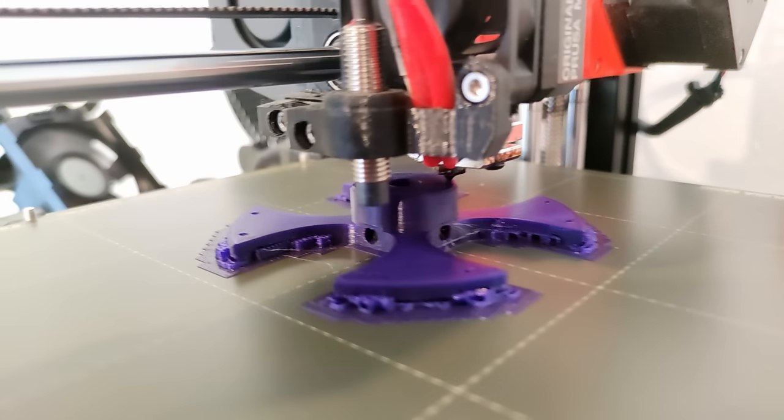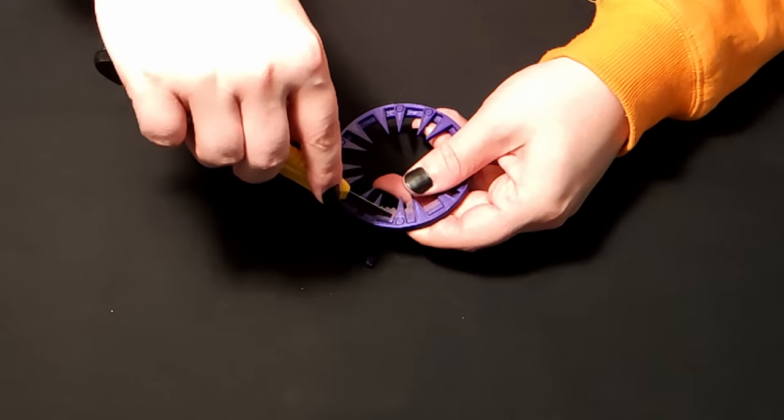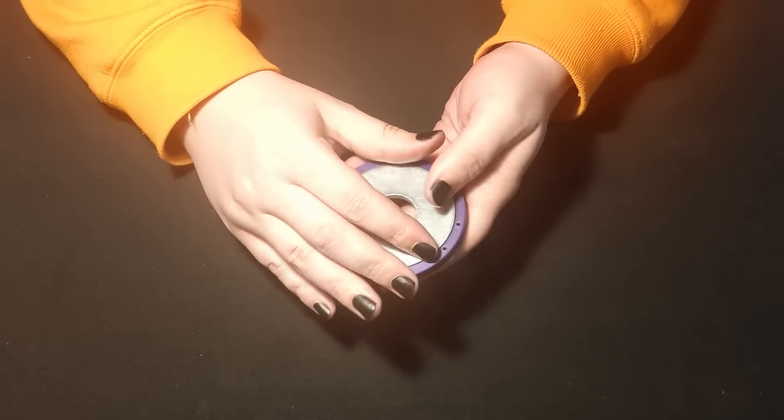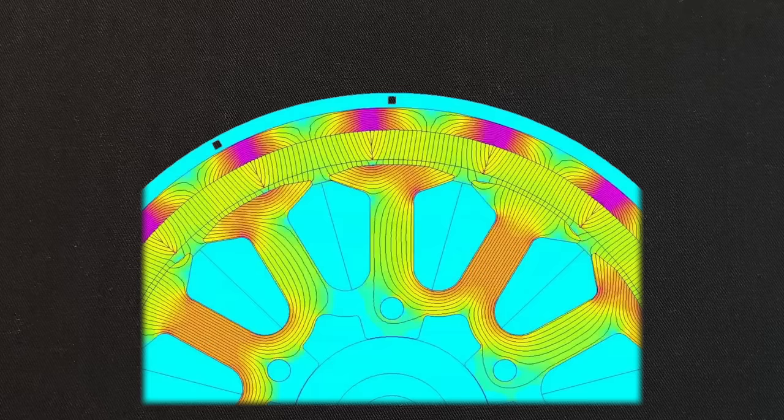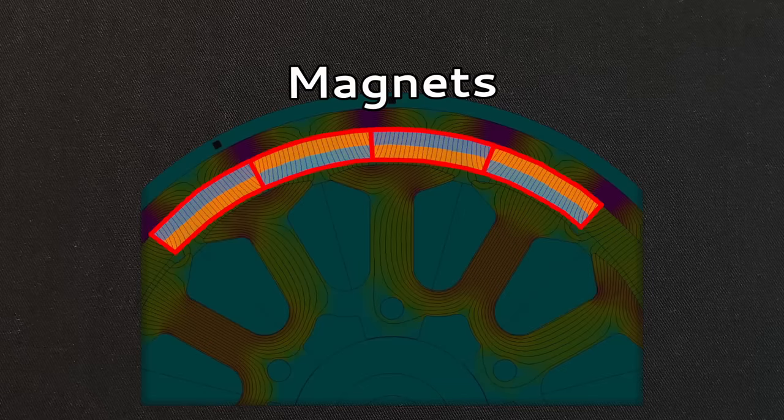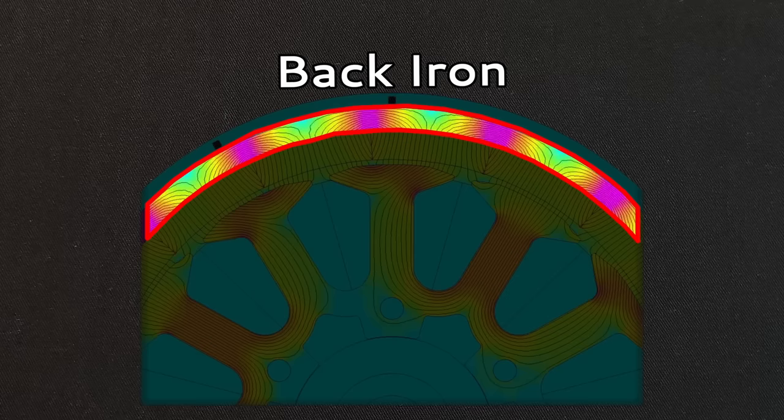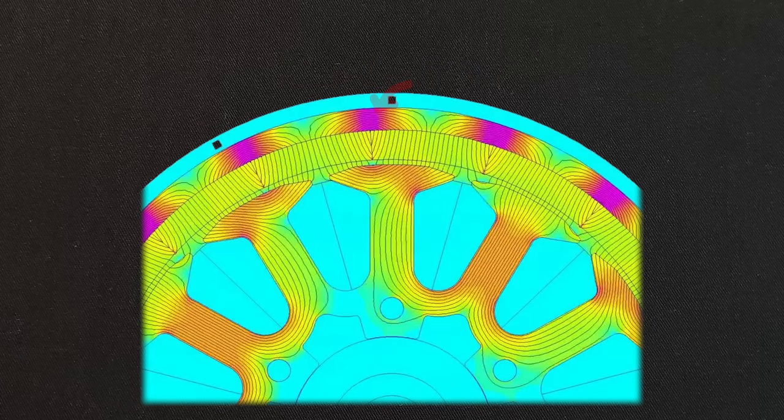I then started by making the rotors. I 3D printed some parts to align all the magnets properly as well as contained a large washer that I figured would act as an iron backing to the magnets. An iron backing usually helps to magnetically couple the magnets together, thus generally increasing the quality and uniformity of the magnetic field produced by the permanent magnets.